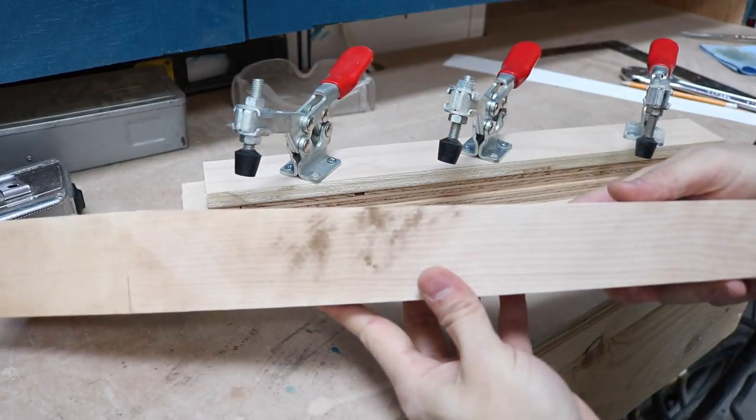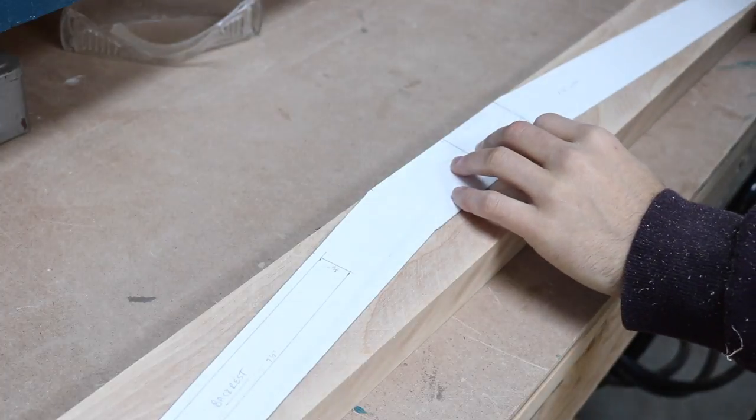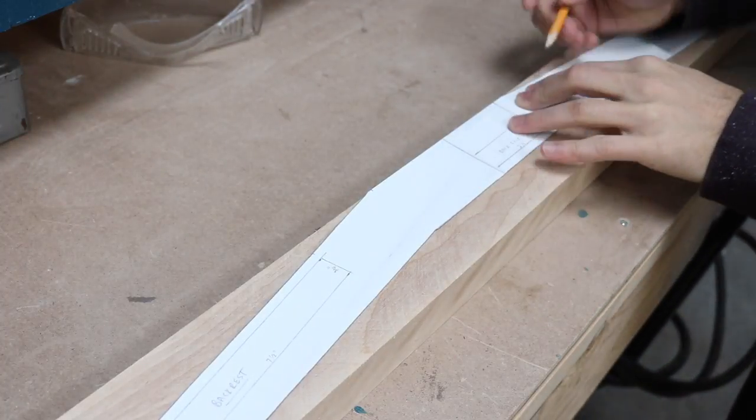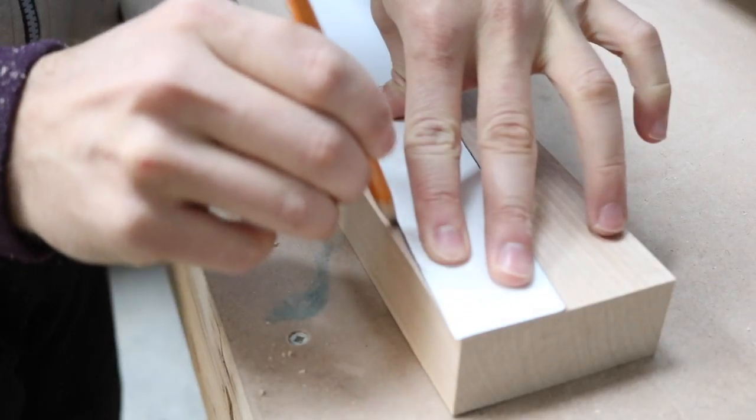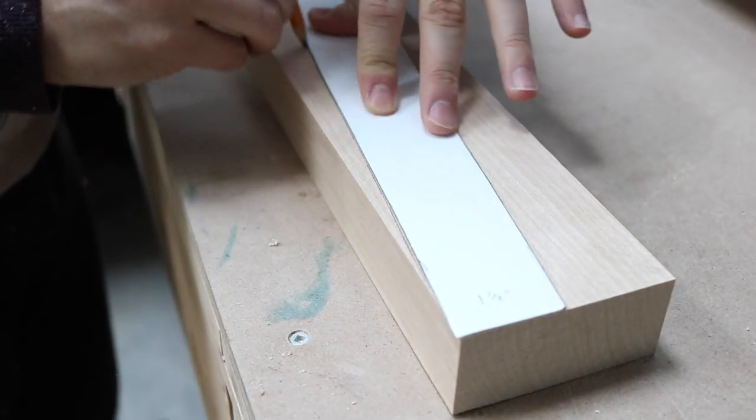For the back legs I used a piece of one and a half inch by three inch stock and traced my template for the arch of the back. The chairs are low back chairs and only measure thirty-two inches high so I wanted to make the back legs out of a solid piece.